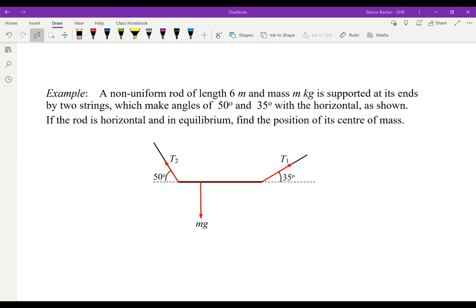And now let's look at a little problem. We take a non-uniform rod, so we don't know where the center of mass is. Length six meters and mass m kilograms, supported at its ends by two strings, one making an angle of 50 degrees with the horizontal and the other one 35 degrees with the horizontal. The rod is horizontal and it's in equilibrium. Find the position of its center of mass.